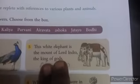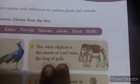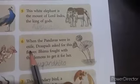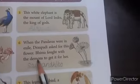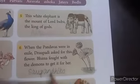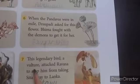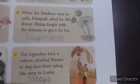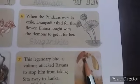Next: the white elephant is the mount (Vahana) of Lord Indra, the king of the gods. That elephant's name is Airavata. Next one: when the Pandavas were in exile, Draupadi asked for this flower. Bhima fought through dangers to get it for her. That flower's name is Saugandika. Next: the legendary bird — a vulture — who attacked Ravana to stop him from taking Sita away to Lanka. That bird's name is Jatayu.